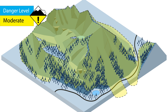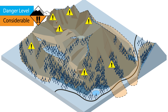Moderate danger means you need to have heightened caution and carefully evaluate or avoid areas in the terrain identified in that day's avalanche advisory. Under considerable danger, avoid avalanche terrain if you don't have the skills and experience to move through terrain carefully. Human-triggered avalanches are likely, and careful evaluation, route-finding, and decision-making are essential.